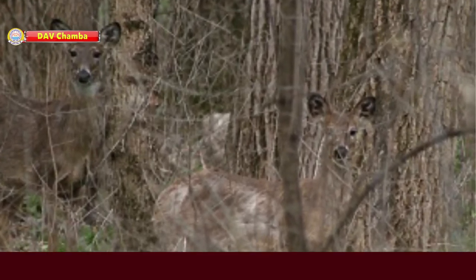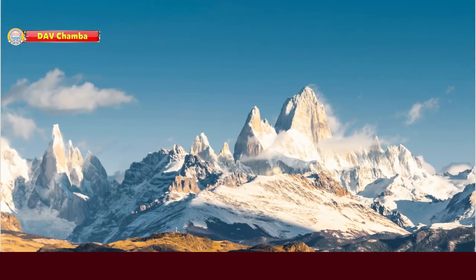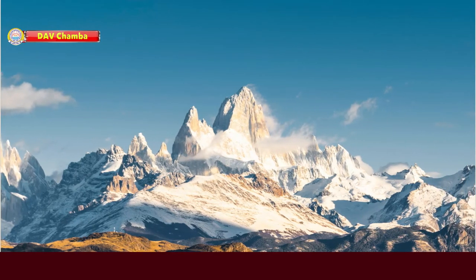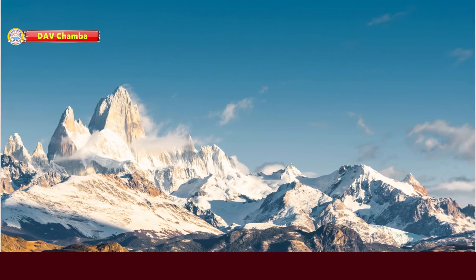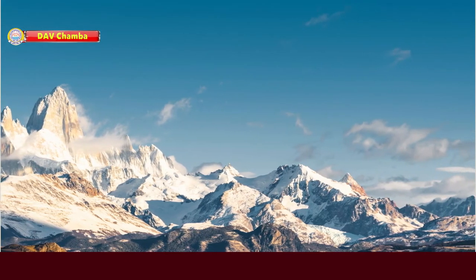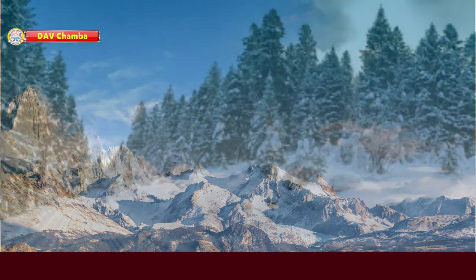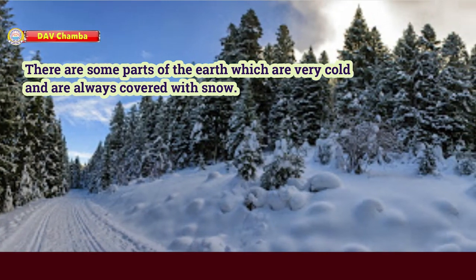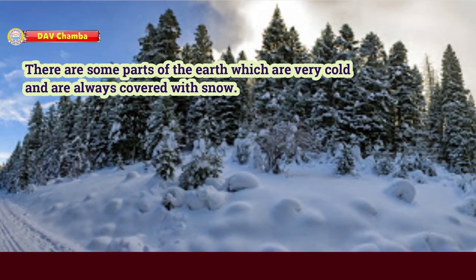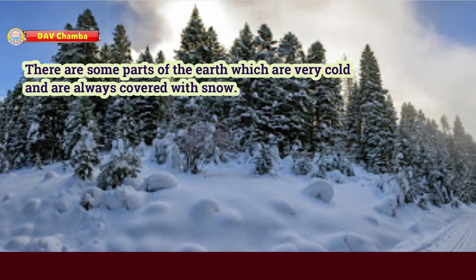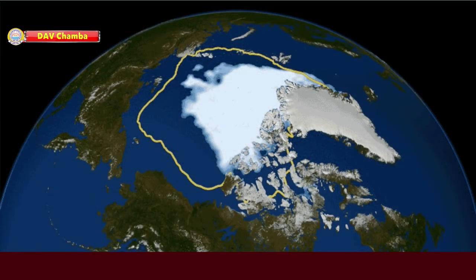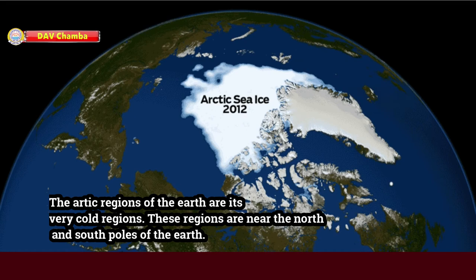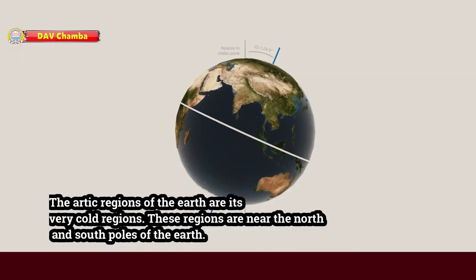The next type of land is snow covered areas. There are some parts of the earth which are very cold and are always covered with snow. These are called the arctic regions of the earth, located near the north and south poles.